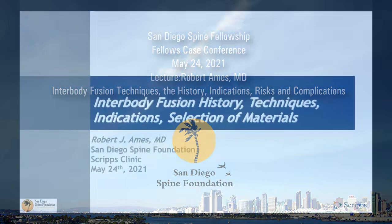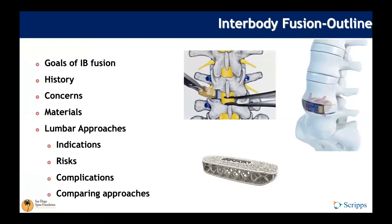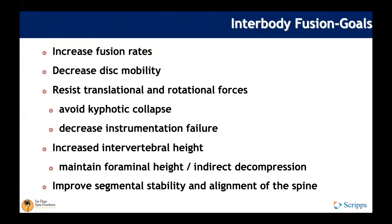This is an overview covering the goals of interbody fusion, history, concerns surrounding techniques, materials for different implants, and approaches with comparative complication analysis. The goals overall include increasing fusion rates, decreasing disc mobility, resisting translational and rotational forces, avoiding kyphotic collapse, decreasing instrumentation failure, increasing intervertebral height including foraminal height for indirect decompression, and improving segmental stability and alignment for deformity correction.